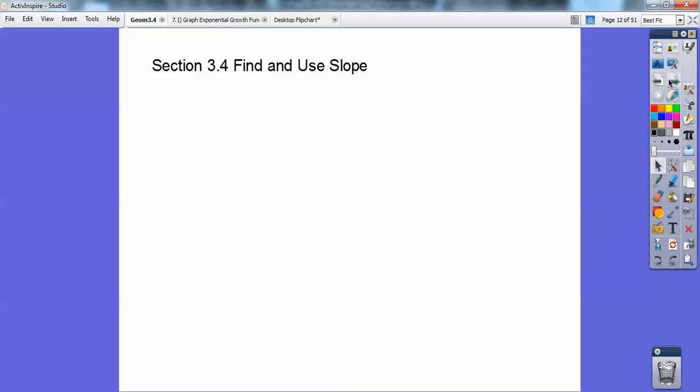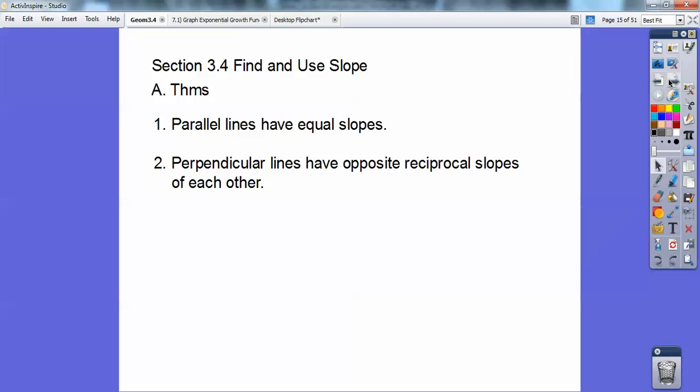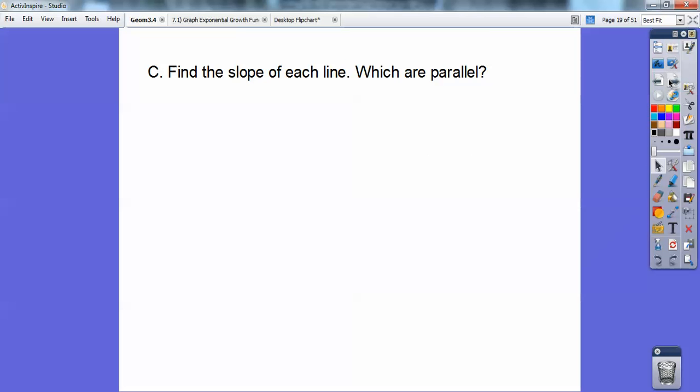We're going to find and use the slope. Here are some theorems: Parallel lines have equal slopes. Perpendicular lines have slopes that are opposite signs of each other and they're reciprocals of each other. Slope of an equation is, if they give you a picture, you can do rise over run, and you can also use the formula y₂ minus y₁ over x₂ minus x₁.